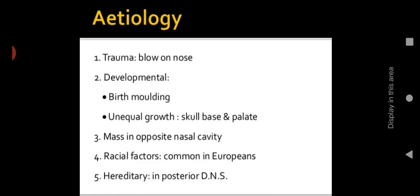Let us see the causes or etiology. Trauma is one of the main causes, including blowing of the nose. Then developmental — meaning congenital — it can occur during fetal development in the mother's womb due to any external trauma or pressure changes in the uterus, which can cause this deformity.